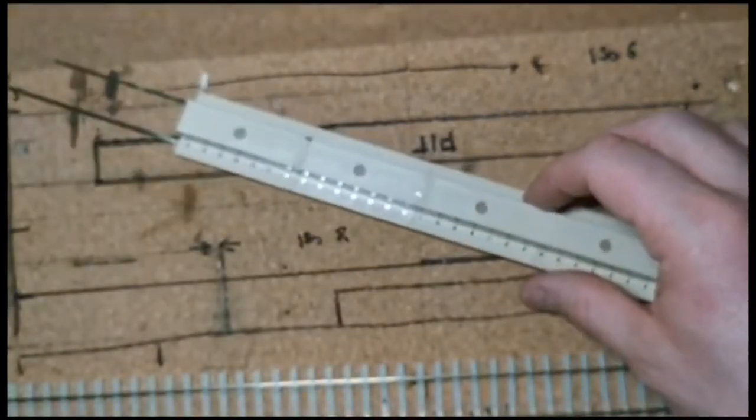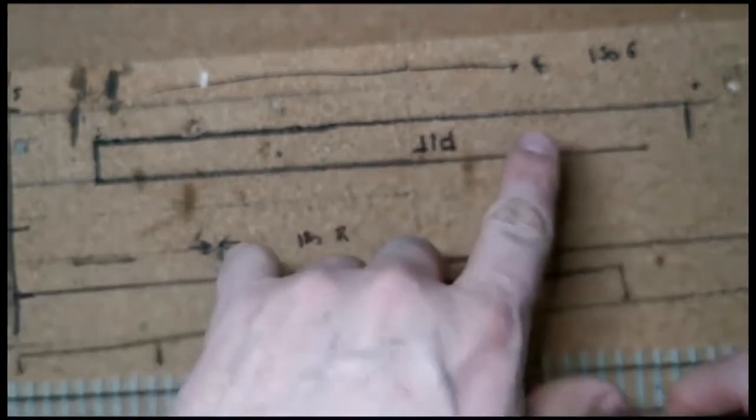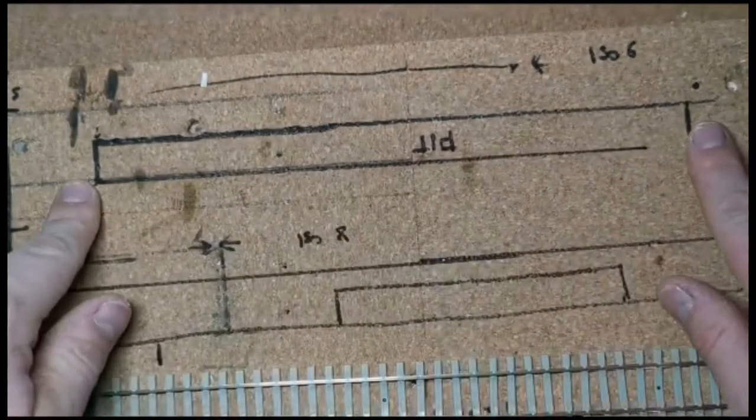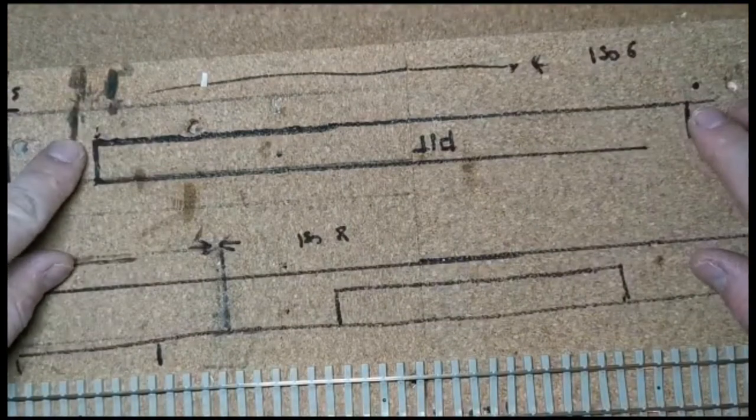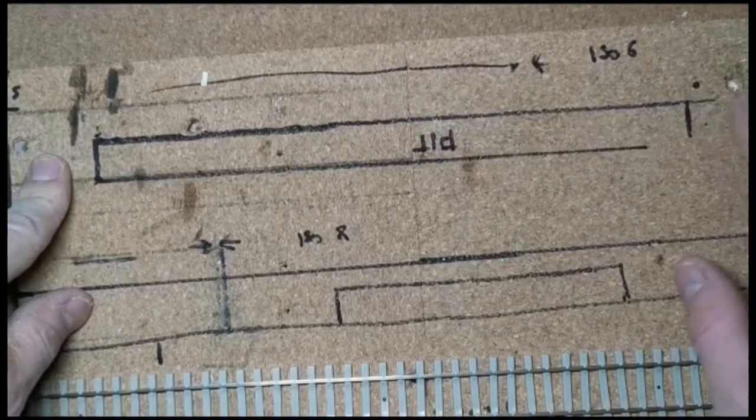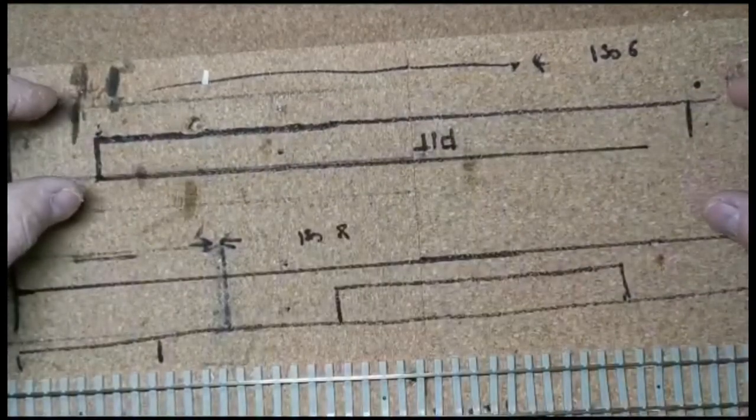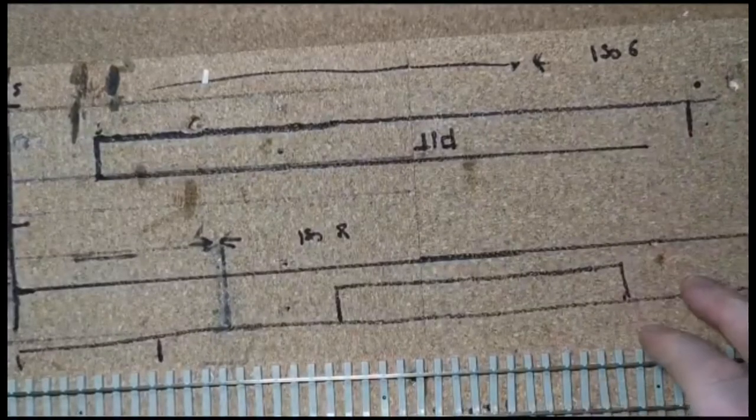Whilst that's setting we'll start tackling the baseboard, the slot for this to drop down into. As you can see I've already marked out the length and the width, and I'll be using a drill bit just to drill a starting hole, and a jack saw to jack saw out the actual slot for the pit to slide down into.